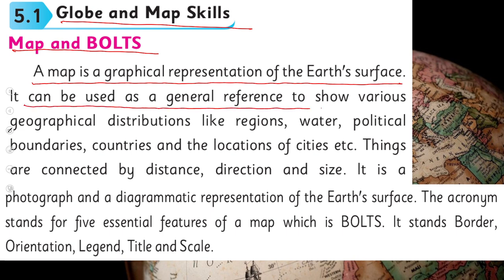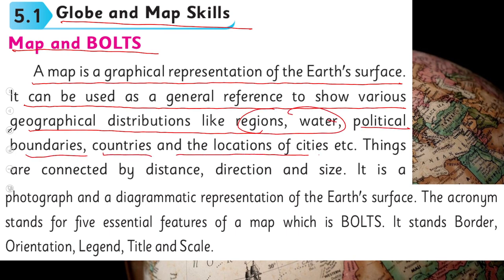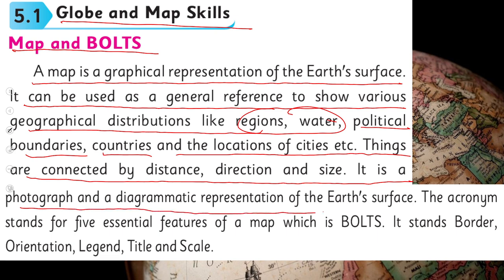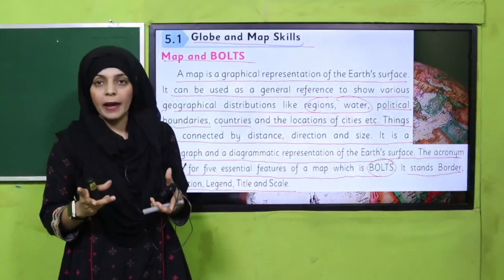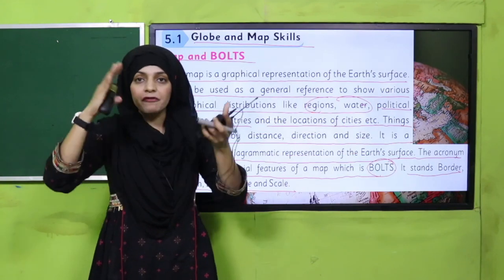A map is a graphical representation of the earth's surface. It can be used as a general reference to show various geographical distributions like regions, water, political boundaries, countries, and the locations of cities. These are connected by distance, direction, and size. It is a photograph and a diagrammatic representation of the earth's surface.